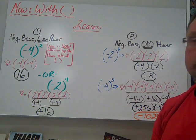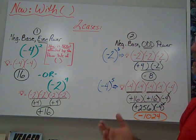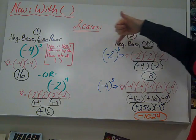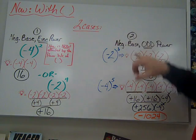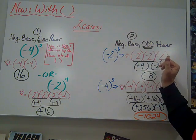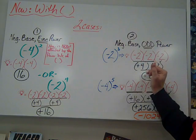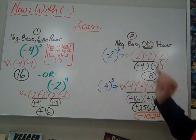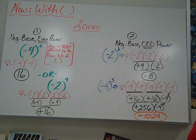The other scenario is we have a negative base to an odd power. We have negative two to the third. So we're going to have three negative twos. We're going to multiply left to right. Negative two, negative two, positive four. Bring our negative two. Gives us a negative eight.